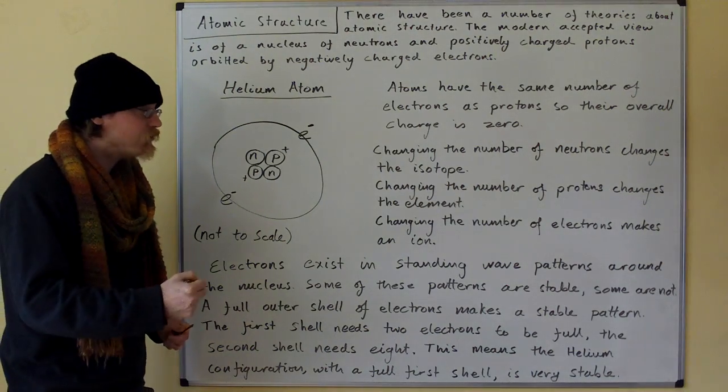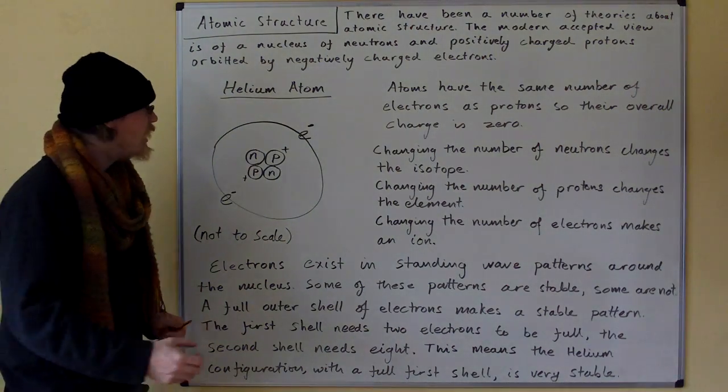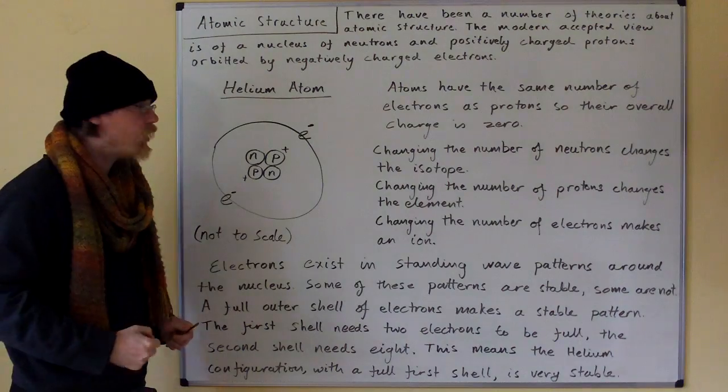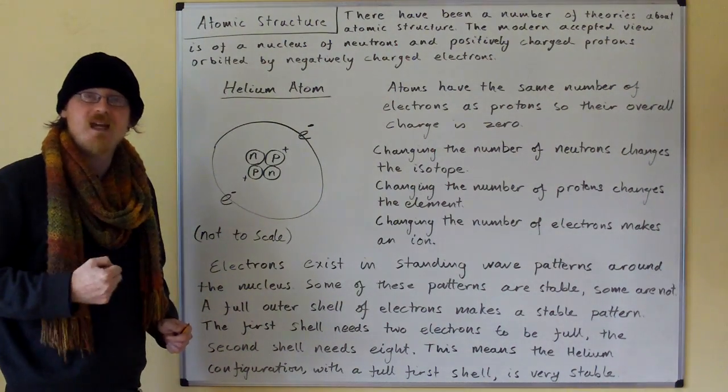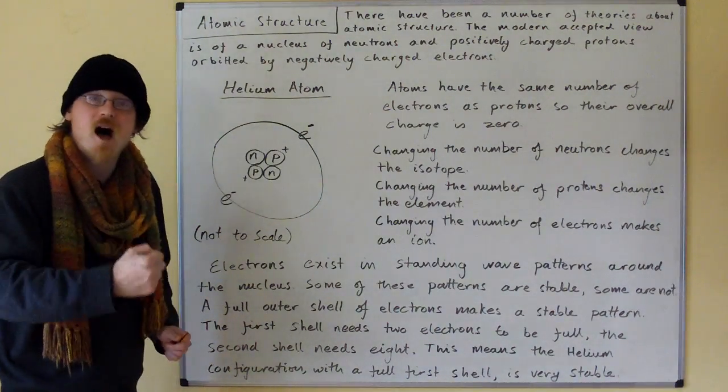Changing the number of electrons makes an ion. So if I were to pull an electron off this helium, I would ionize my helium, and I would make a helium ion.